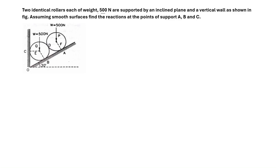We will resolve this question where we have been given that two identical rollers of each weight 500 Newton are supported by an inclined surface and a vertical wall as shown in the figure. Each roller has a 500 Newton weight, and assuming smooth surfaces, which means there will be no friction, we need to find the reactions at the points of support A, B, and C.